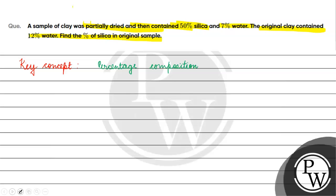What has been given? We have a sample of clay that is partially dried. It contains 50% silica and 7% water. The original clay had 12% water. We have to find the percentage of silica in the original sample.